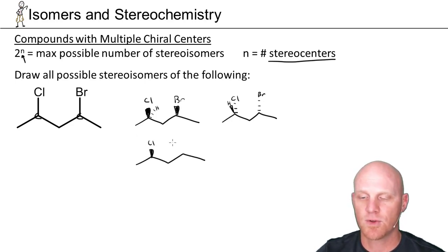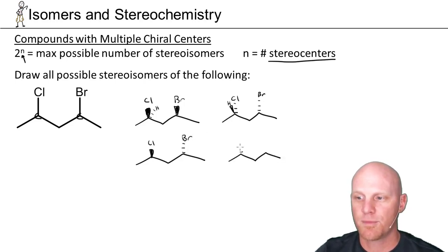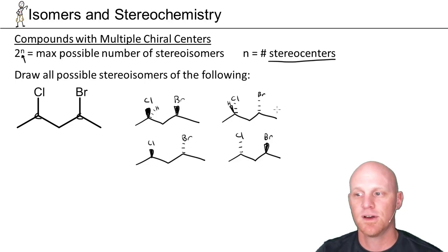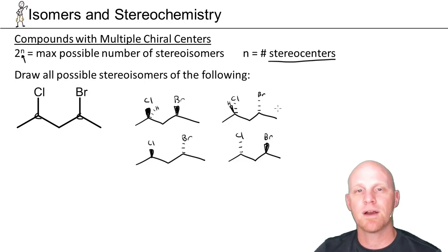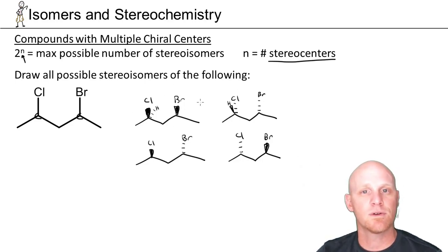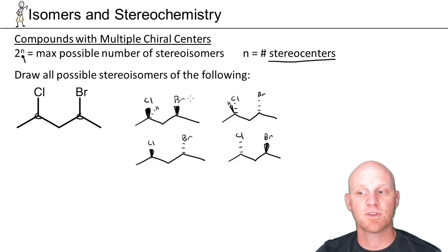I've got two more stereoisomers to draw. In this case, I'll put the chlorine as the wedge and the bromine as the dash. And then over here, the chlorine as the wedge and the bromine as the dash. These are the four stereoisomers that are possible, hitting that maximum of four. We can now compare any two of these and use the relationship of enantiomers or diastereomers. All four are stereoisomers of each other, and a comparison of any two leads to either an enantiomer or diastereomer relationship.